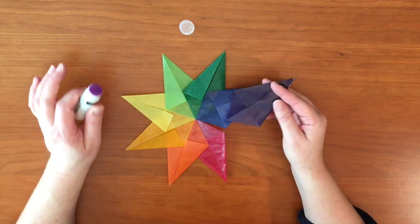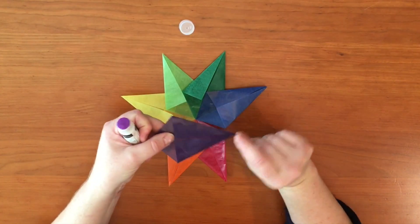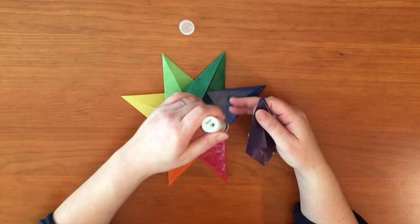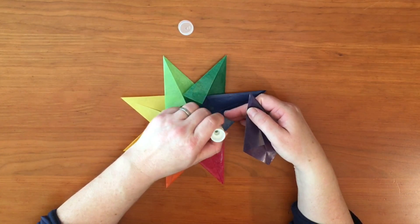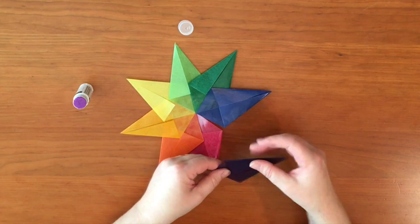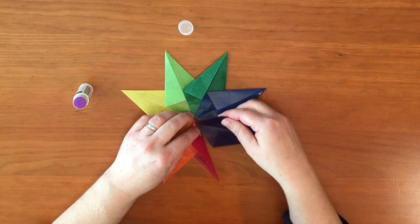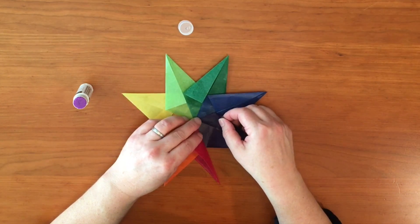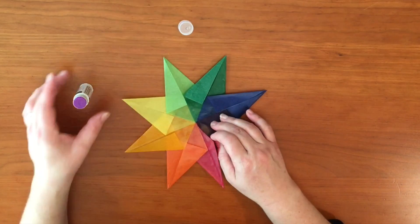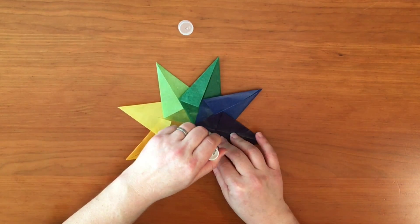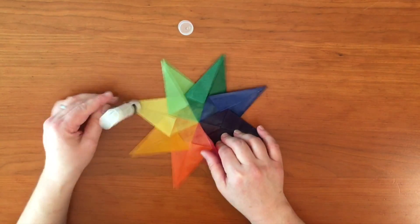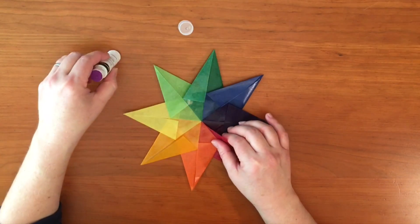Now that we're on our last point of the star, the purple one, I want to show you how to do that one because you have to do a little bit of tucking. So I put the glue on the blue star and I'm going to nestle the purple star in between the blue and the red, and then I'm going to add just a little bit of glue on this purple point so that way it's overlapping.